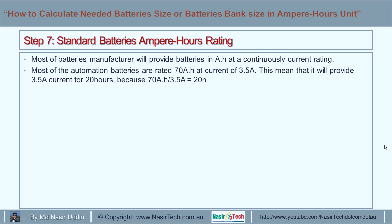Step 7: Standard battery amp hour rating. Most manufacturers provide battery ratings in amp hours at a constant current rating. For example, an automotive car battery rated at 70 amp hours at 3.5 amps means the battery will provide 3.5 amps of current for 20 hours, because 70 amp hours divided by 3.5 amps equals 20 hours.